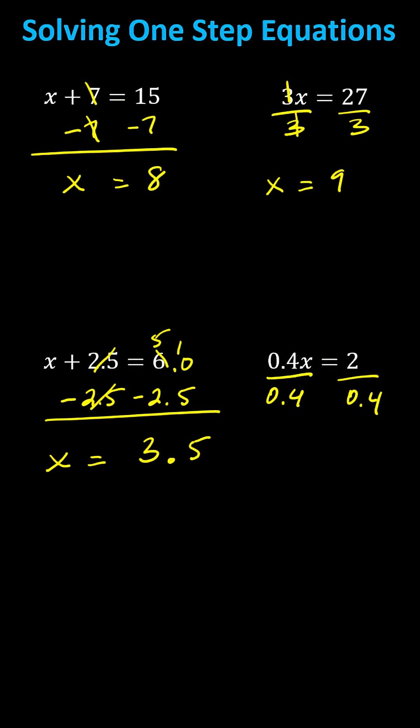Simplifying on the left, 0.4 divided by itself simplifies to one, giving us x equals two divided by 0.4. Let's set this up below. We need the divisor to be a whole number, so we'll first move the decimal point of the divisor one place to the right. And we can do this as long as we do the same to the dividend.